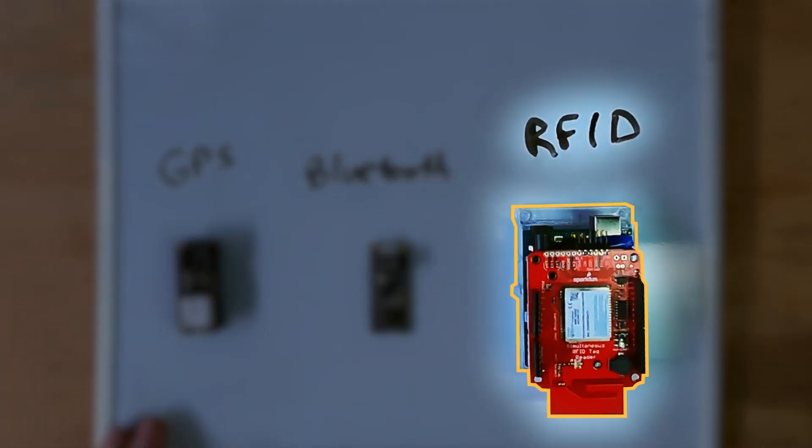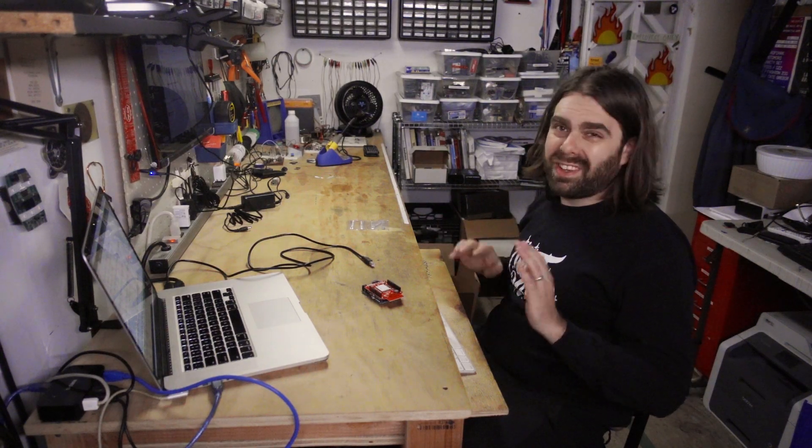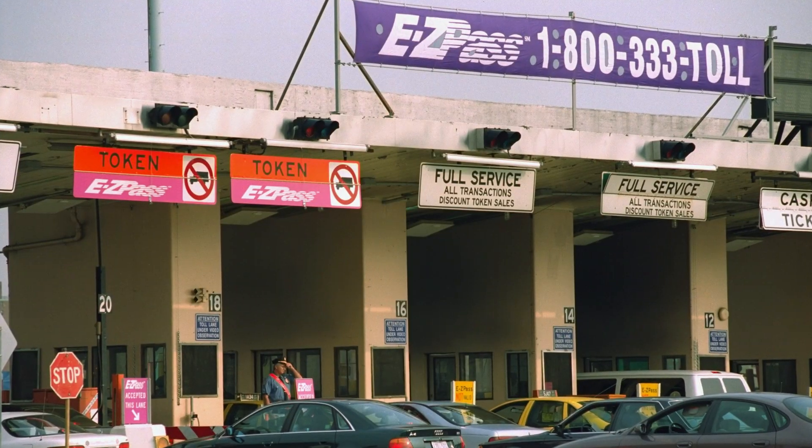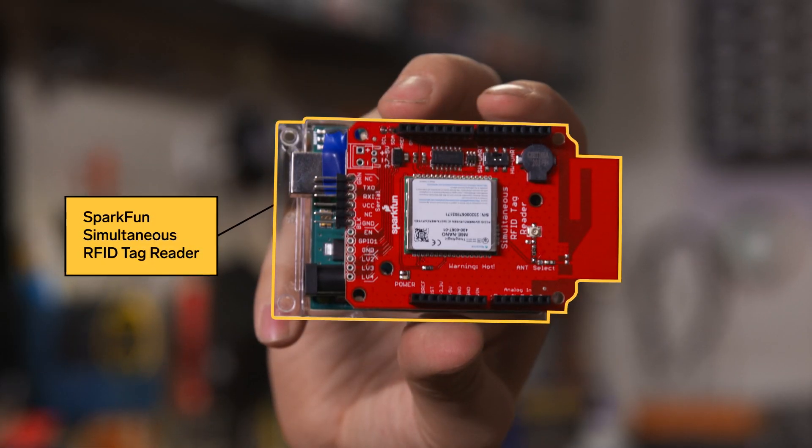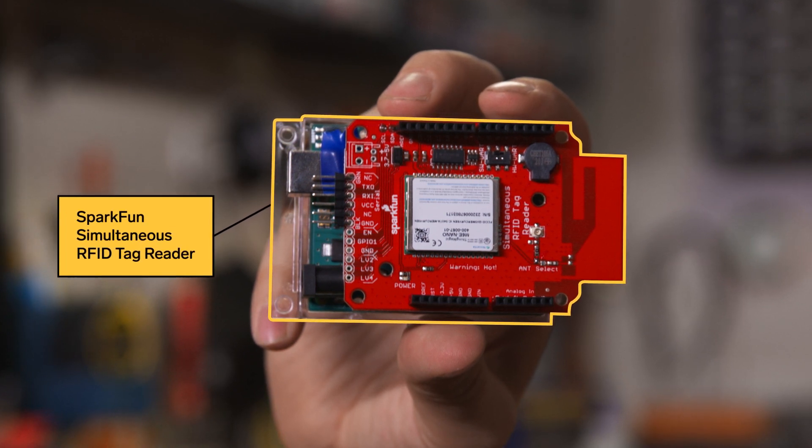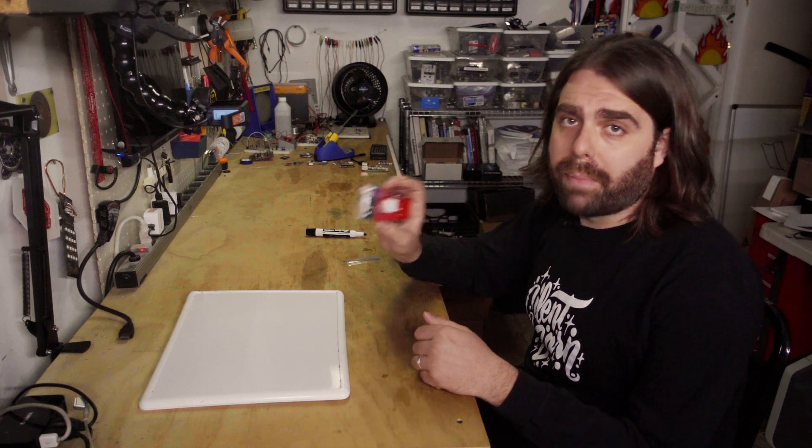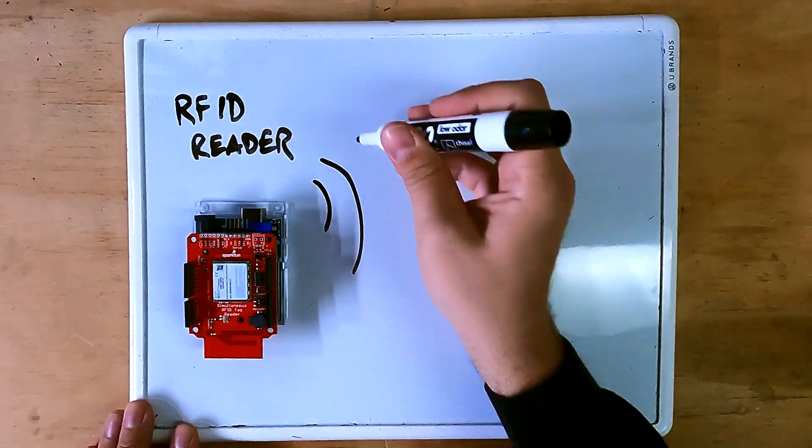RFID, Radio Frequency Identification. This is pretty ubiquitous if you've ever used an E-Z Pass. Those things that are on clothes if you try to walk out with them. So what I've got here is a SparkFun simultaneous RFID tag reader. And it's attached to an Arduino Uno microcontroller.